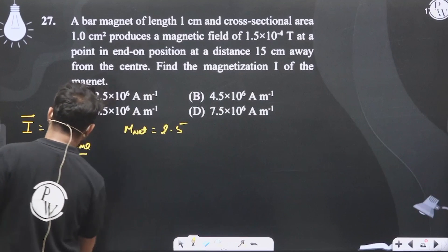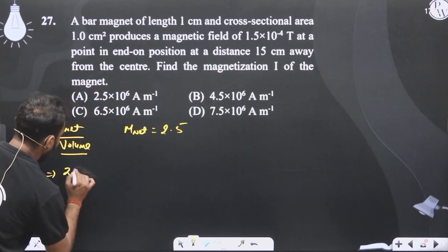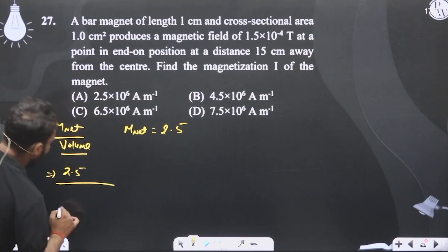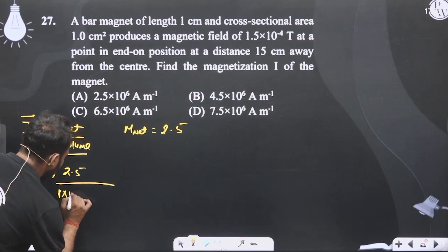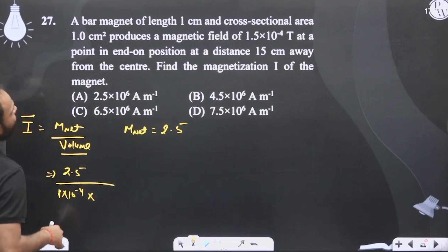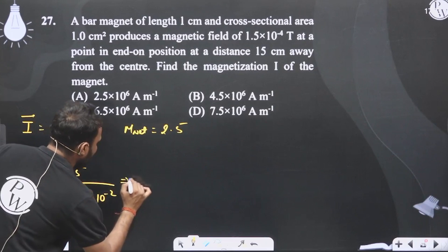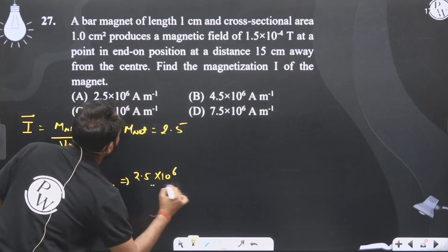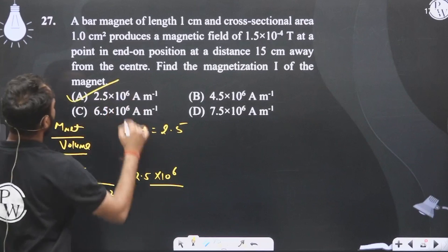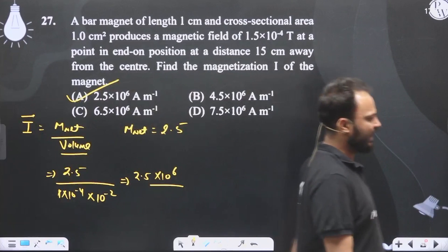So if we put the value here, 2.5 upon area which is 1 cm square, so 1×10⁻⁴ into length which is 1 cm, meaning 10⁻², so it will be nothing but 2.5×10⁶. So option A should be our correct answer.